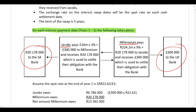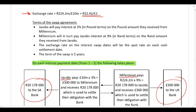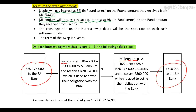We need to look at the arrangement in terms of the swap agreement. Both companies have agreed to the following: Jacobs is going to pay interest at 3% to Millennium, and Millennium is going to pay interest at 9% to Jacobs. So Jacobs pays 300,000 pounds to Millennium, and Millennium pays 20,178,000 rand to Jacobs — in addition to the original obligations they have with their banks.